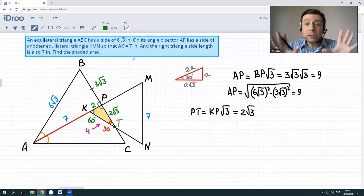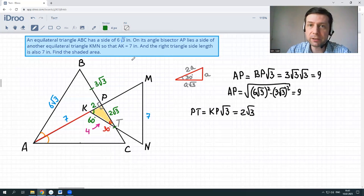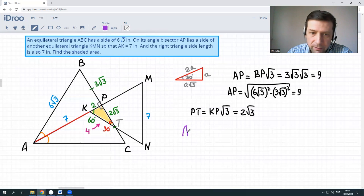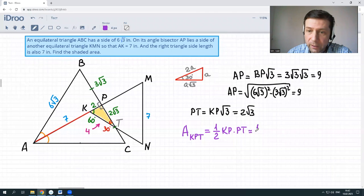And now we only need to remember the formula for the area of a triangle. And especially for the right triangle, we usually deal with legs, right? The half of the product of the legs is the area of triangle. The area of KPT triangle is 1/2 times KP times PT. That's it. Now we simply substitute the numbers and we are fine.